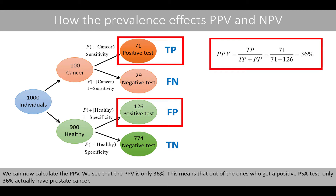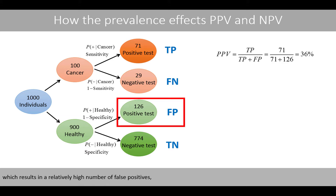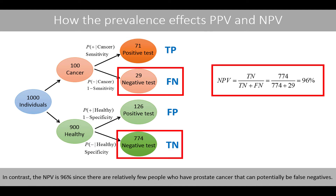We can now calculate the positive predictive value and see that it is only 36%. This means that out of those who get a positive PSA test, only 36% actually have prostate cancer. The reason for the very low positive predictive value is that 90% of the people who take the test are healthy, resulting in a relatively high number of false positives compared to true positives. In contrast, the negative predictive value is 96%, since there are relatively few people with prostate cancer who can potentially be false negatives.